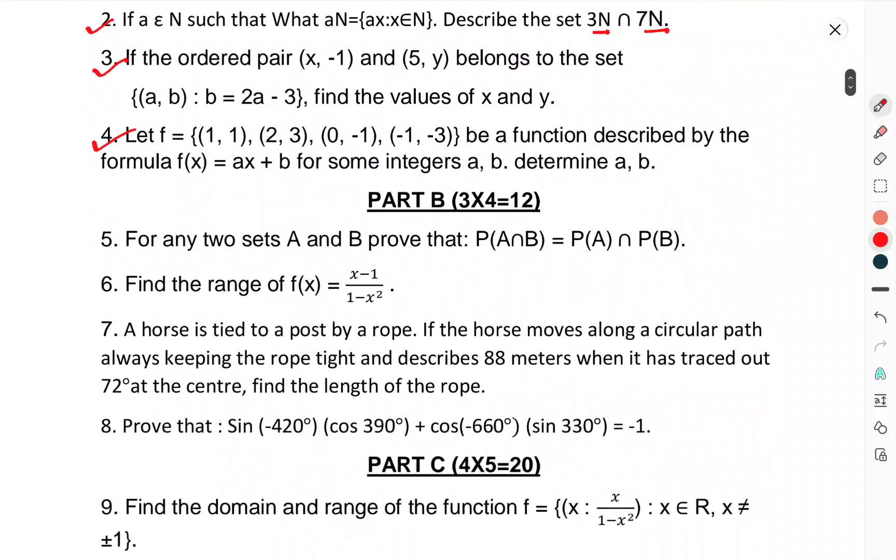Question number 4: Let f = {(1, 1), (2, 3), (0, -1), (-1, -3)} be a function described by the formula f(x) = ax + b for some integers a, b. Determine a and b.